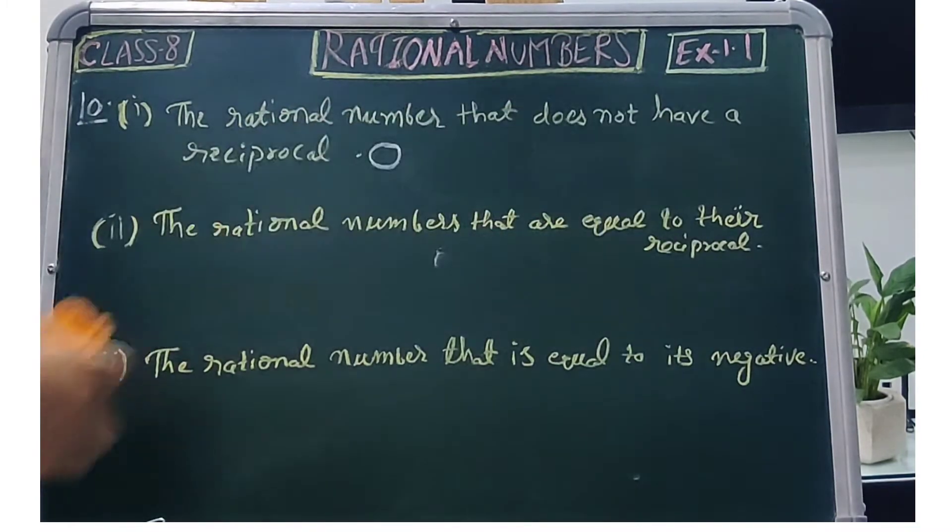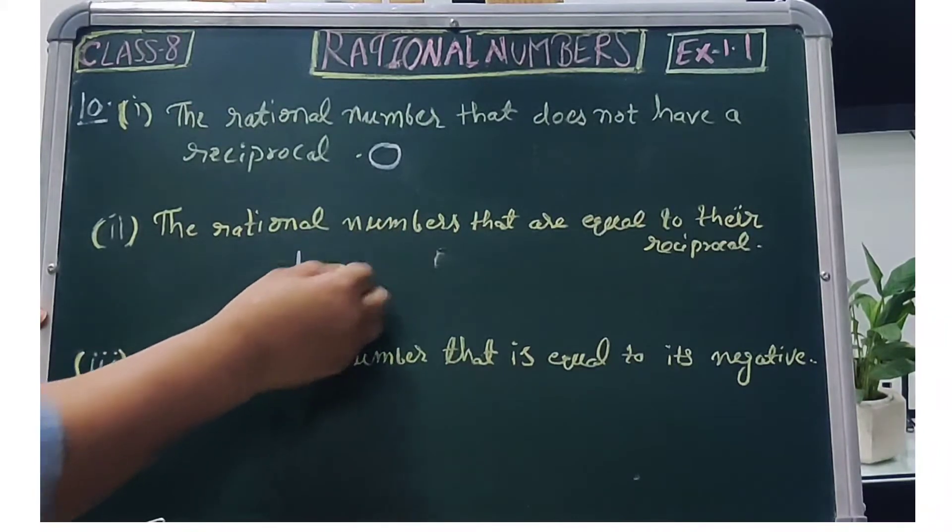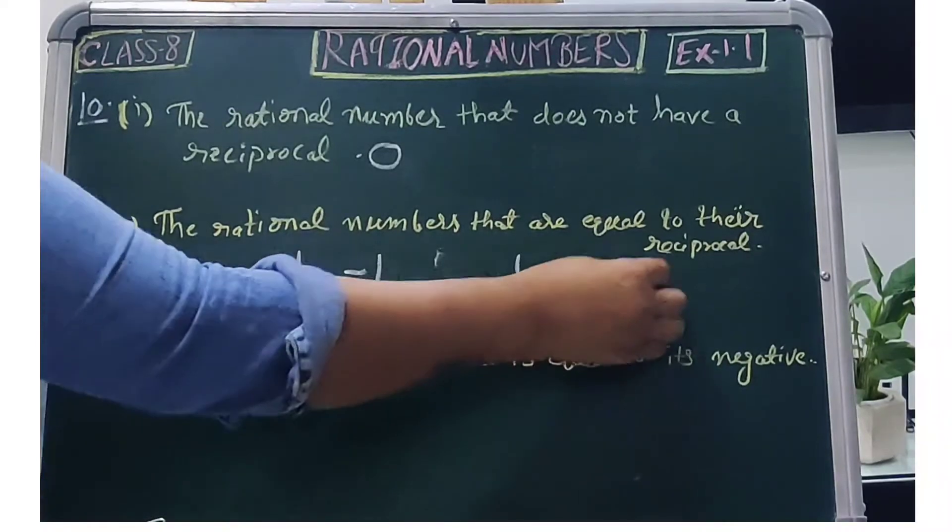Okay, now the rational numbers that are equal to their reciprocal. So that is 1 and minus 1. What is the reciprocal of 1? Again, 1 by 1 means 1.